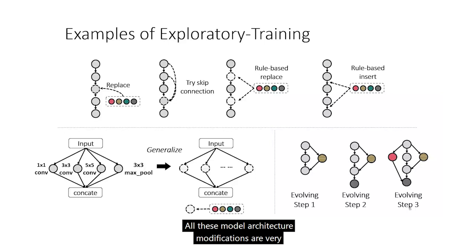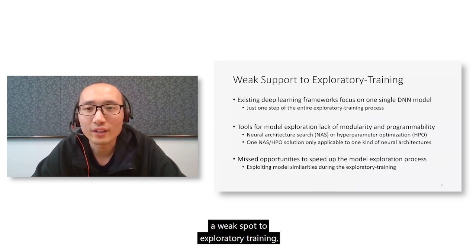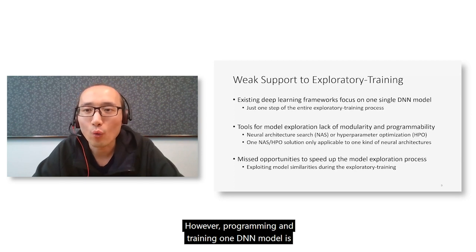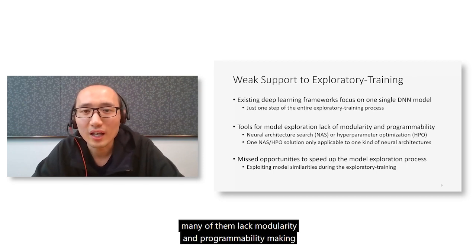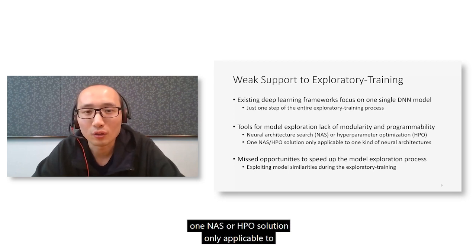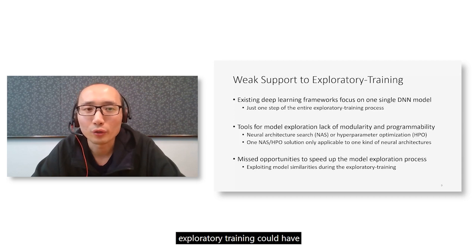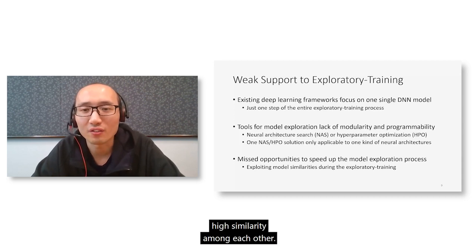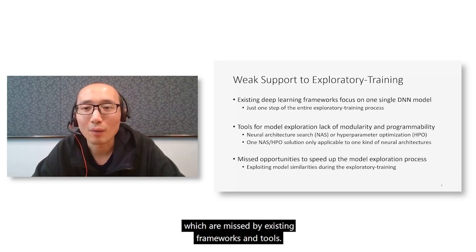All these model architecture modifications are very common during designing a new model. However, existing frameworks have weak support for exploratory training because they only focus on a single DNN model. Programming and training one DNN model is just one step of the exploratory training process. Although there are tools for neural architecture search or hyperparameter optimization, many of them lack modularity and programmability, making solutions only applicable to one kind of neural architecture or a specific task. The models explored during exploratory training could have high similarity, offering great opportunities to leverage such similarity to speed up the process.